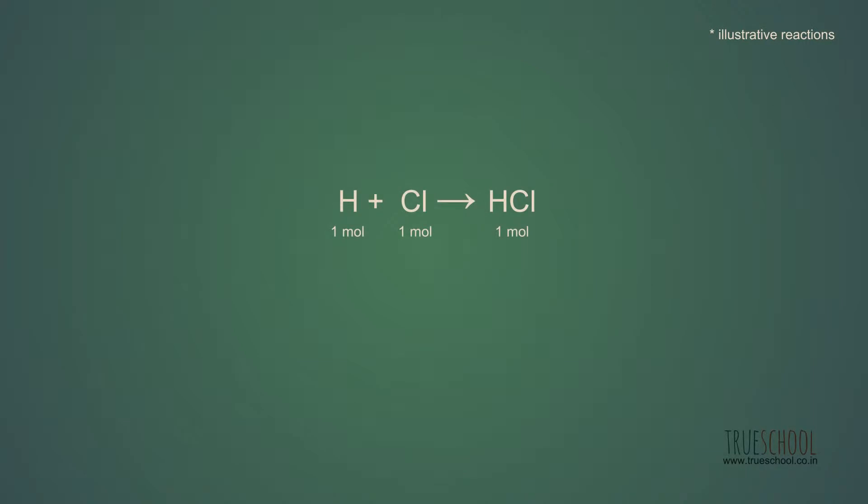H plus Cl gives HCl. In this reaction, one mole of hydrogen atom reacts with one mole of chlorine atom to give the product.